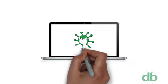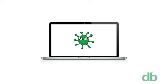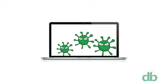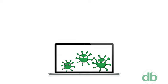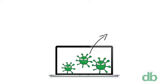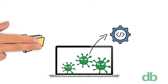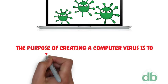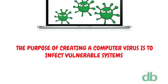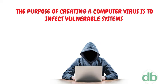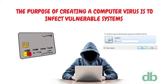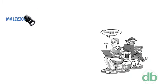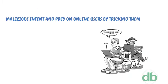A computer virus is a malicious program that self-replicates by copying itself to another program. In other words, the computer virus spreads by itself into other executable code or documents. The purpose of creating a computer virus is to infect vulnerable systems, gain admin control, and steal user sensitive data. Hackers design computer viruses with malicious intent and prey on online users by tricking them.